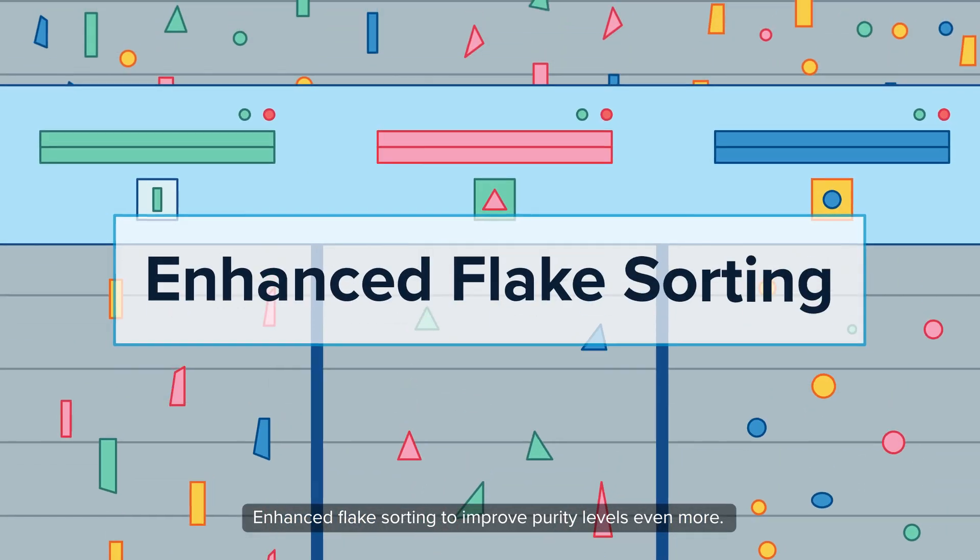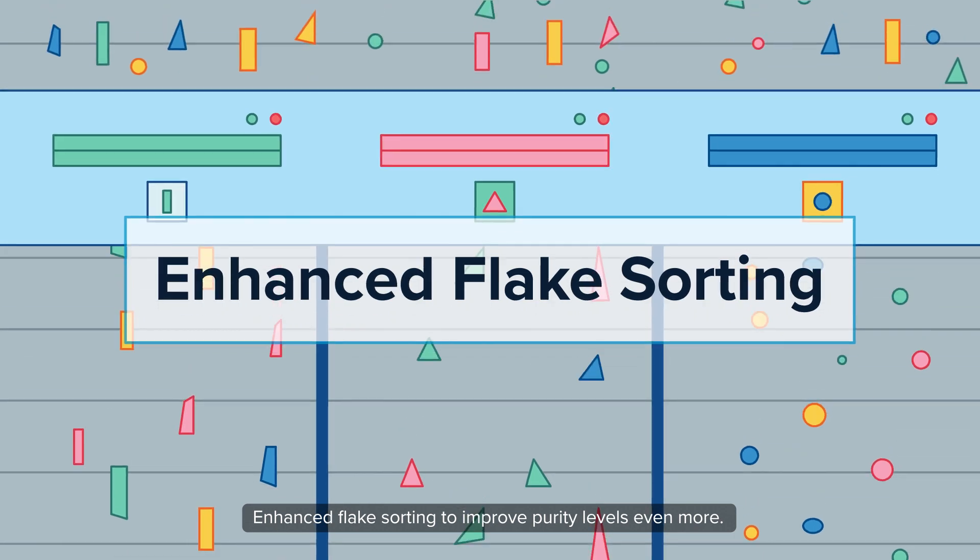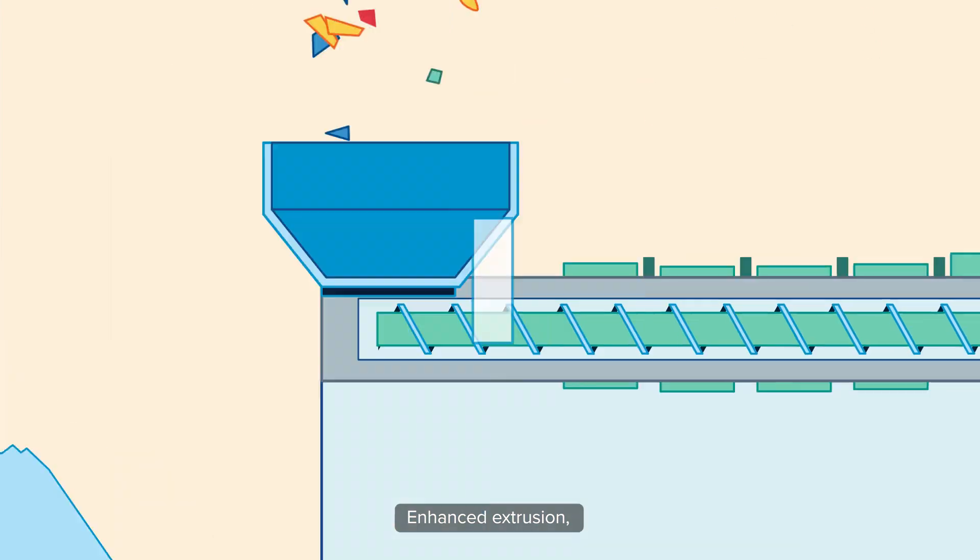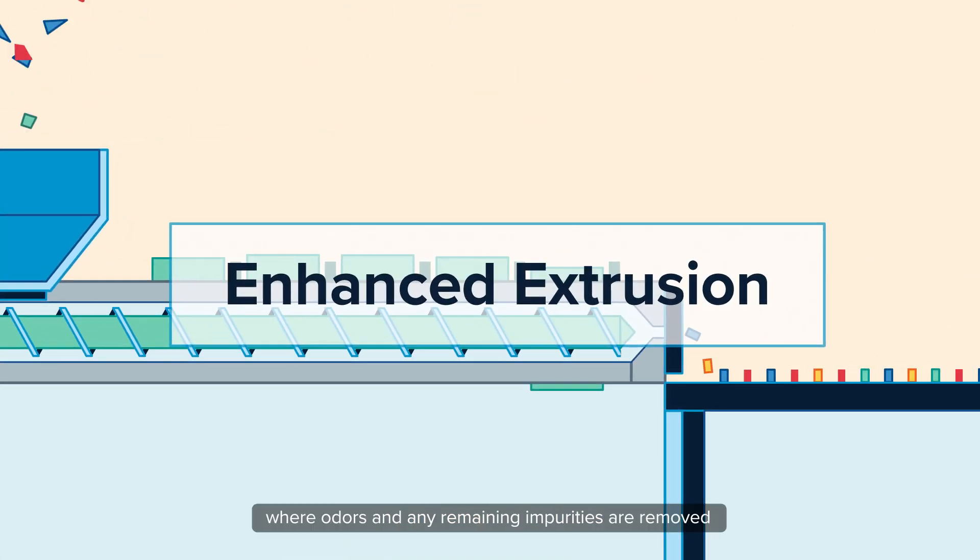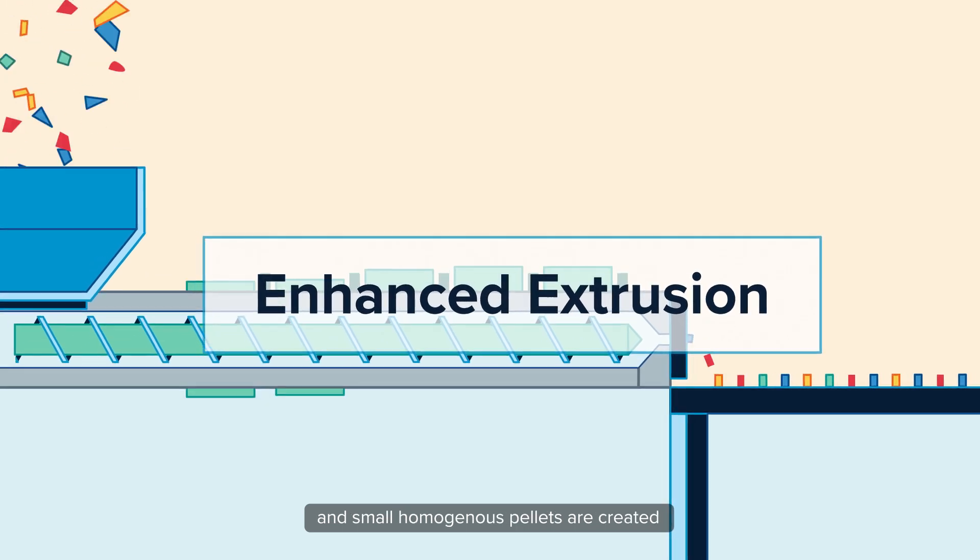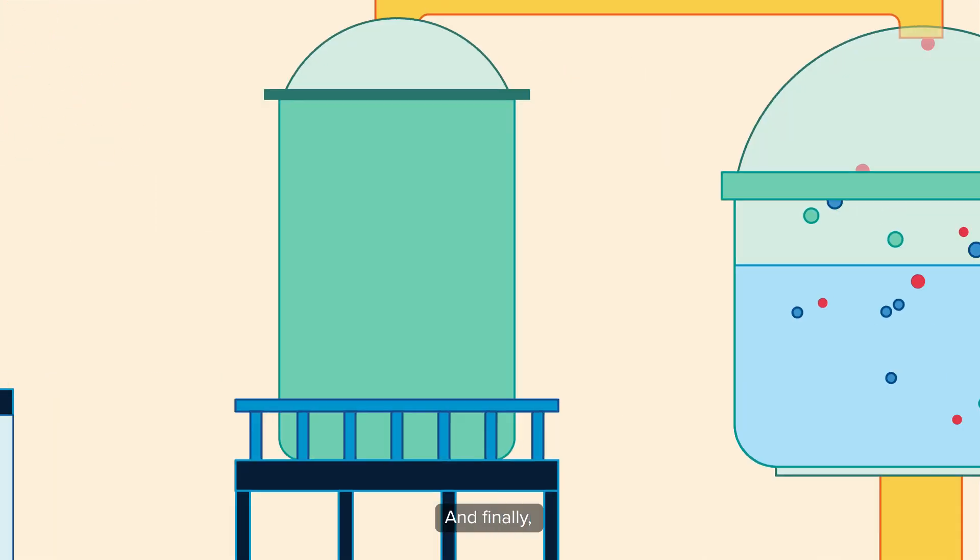Enhanced flake sorting improves purity levels even more, deodorization reduces odors, and enhanced extrusion removes any remaining impurities while creating small homogenous pellets.